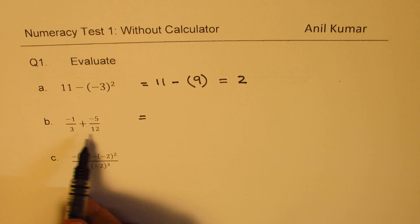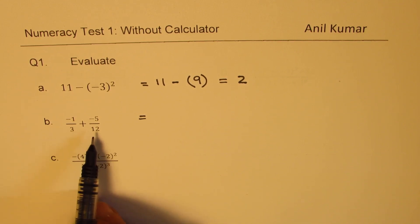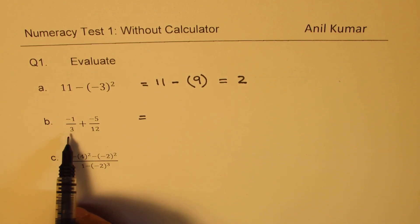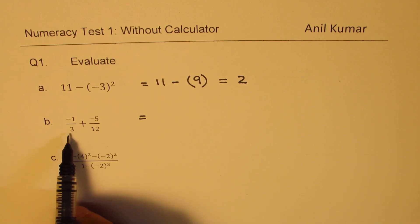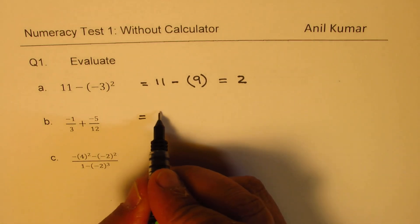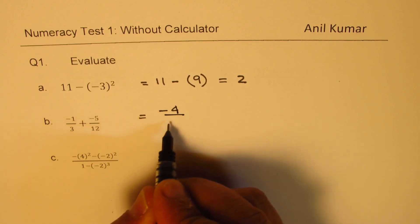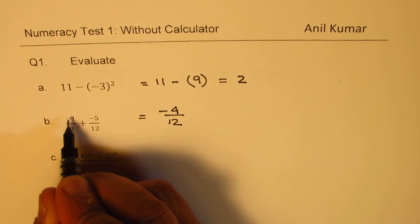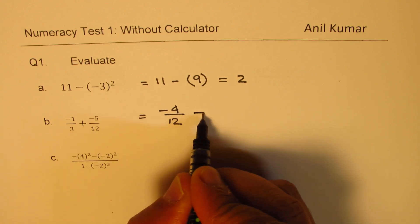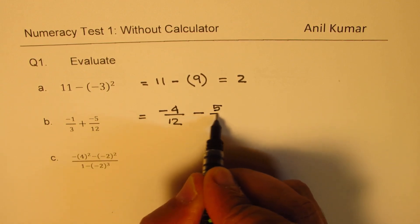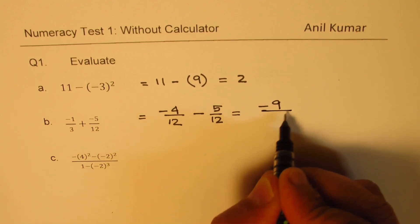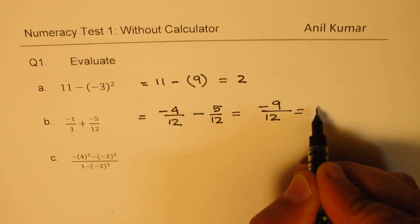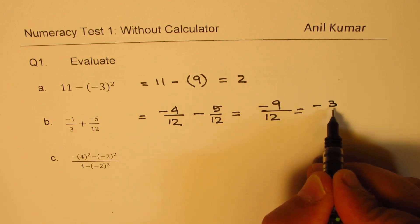The second one is a fraction — we need to write with the same denominators. The denominators are 3 and 12. The lowest common multiple common to both is 12. To make this 12, we write minus 4 over 12, multiplying both by 4. Plus and minus gives us negative 5 over 12, and these two negatives give us negative 9 over 12. We can divide by 3, so we get 3 over 4 with a negative sign.